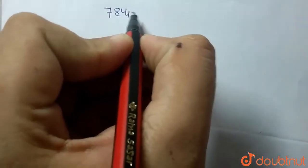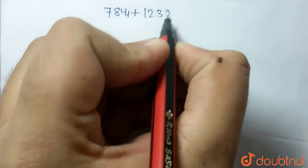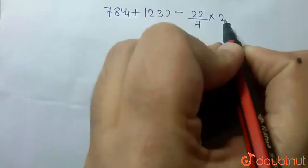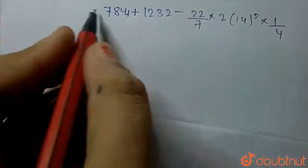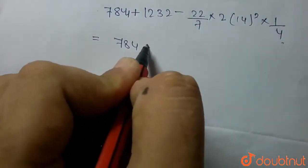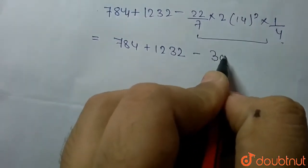After solving the area part, we get 784 plus 1232 minus 22 upon 7 times 2 times 14 squared. 90 upon 360 is 1 by 4, so we can solve it. We get 784 plus 1232 minus 308, which equals 1708 centimeter squared.